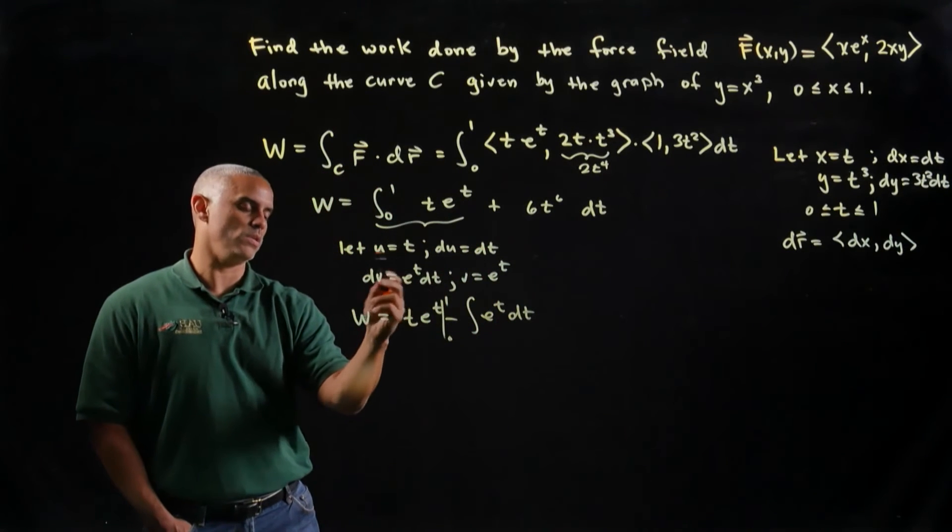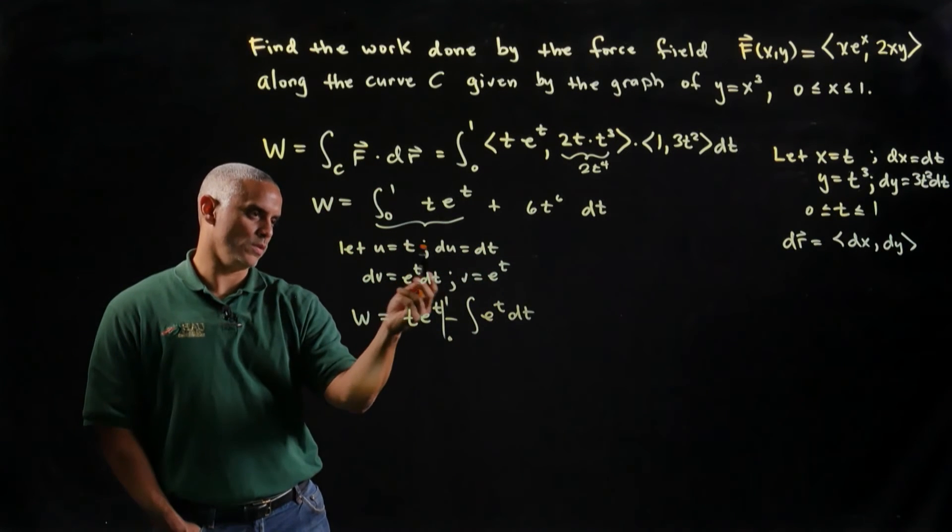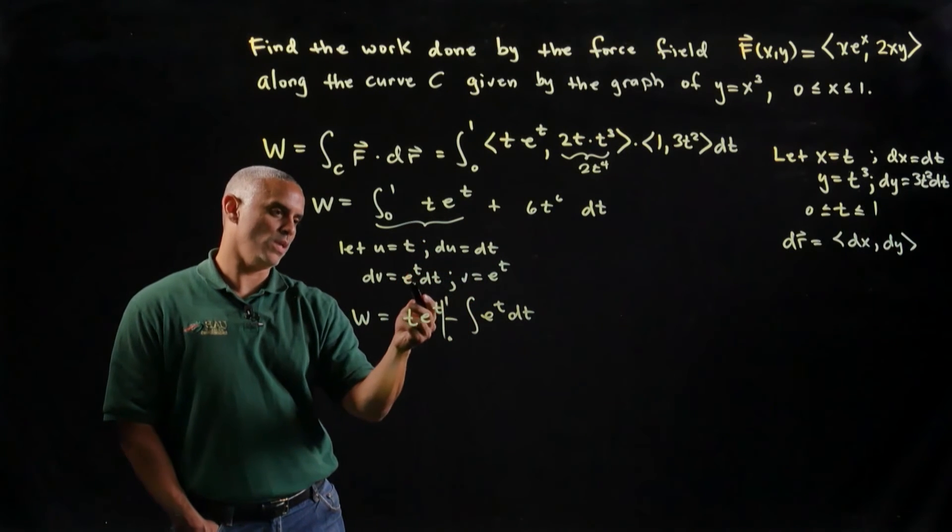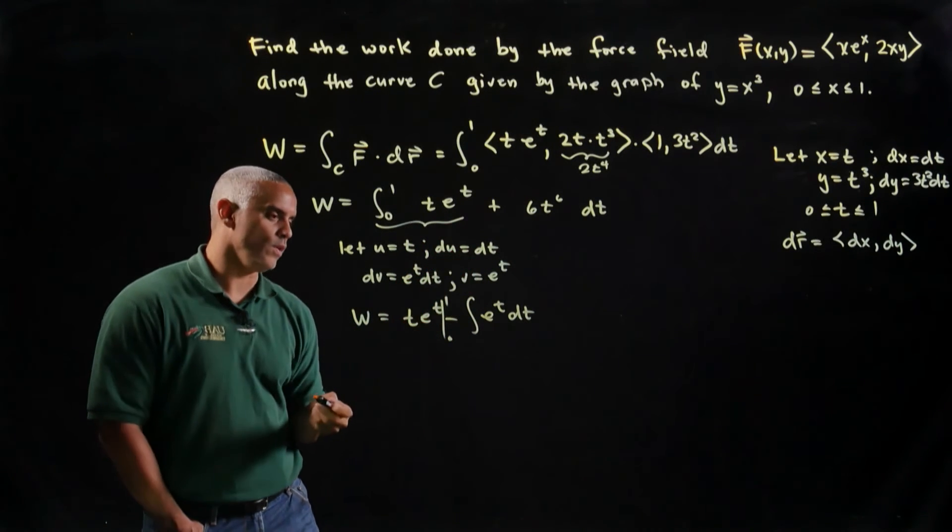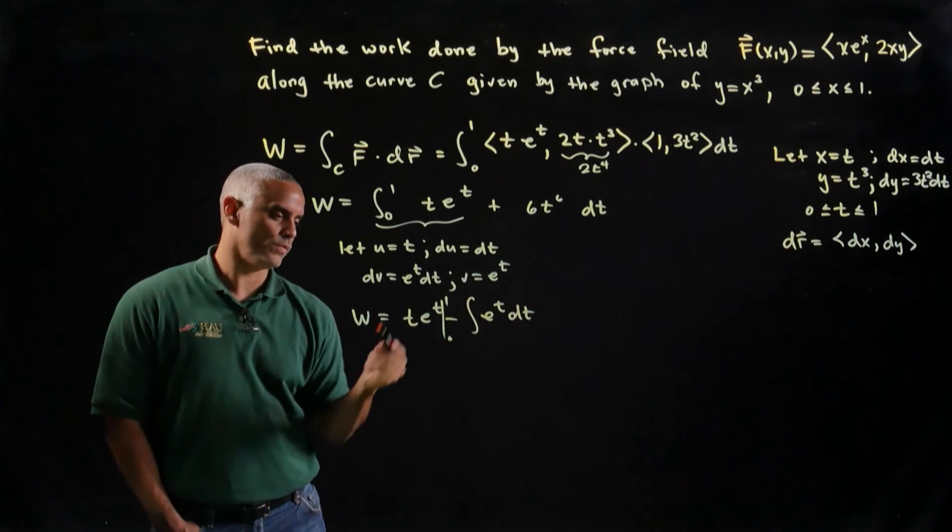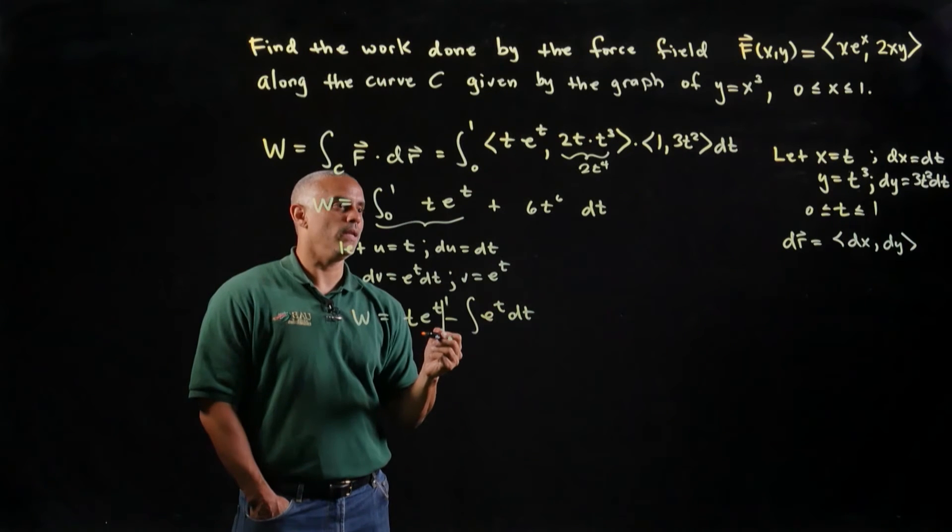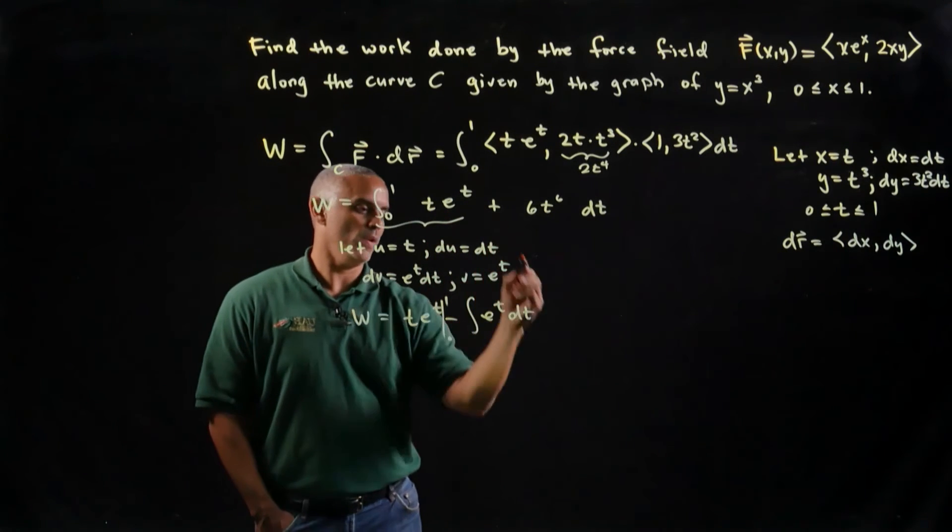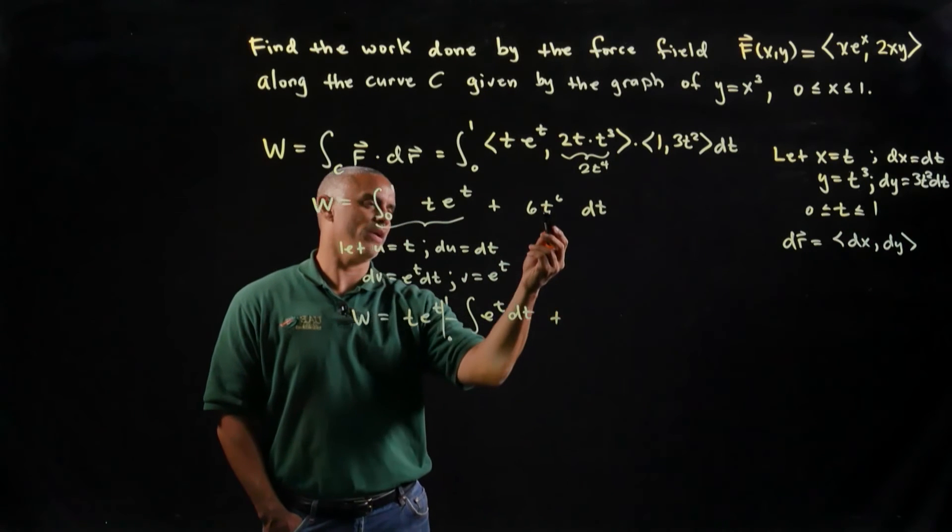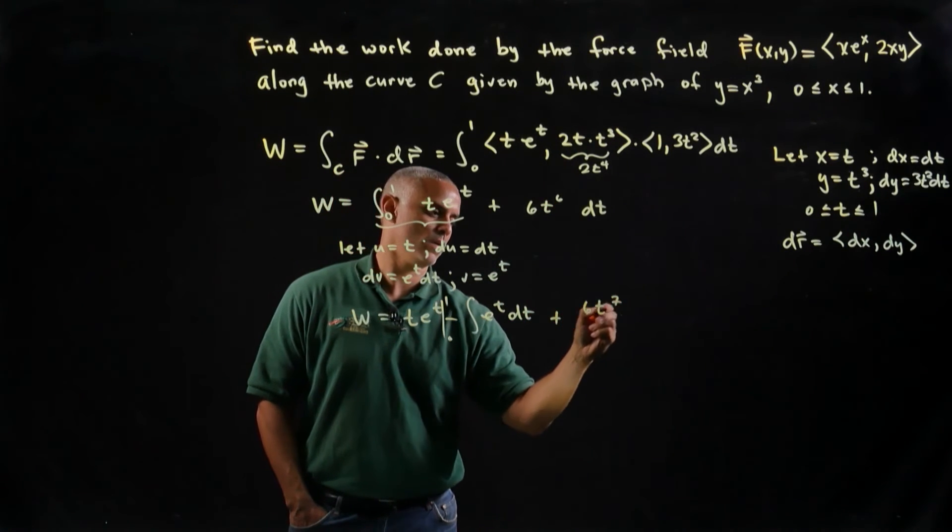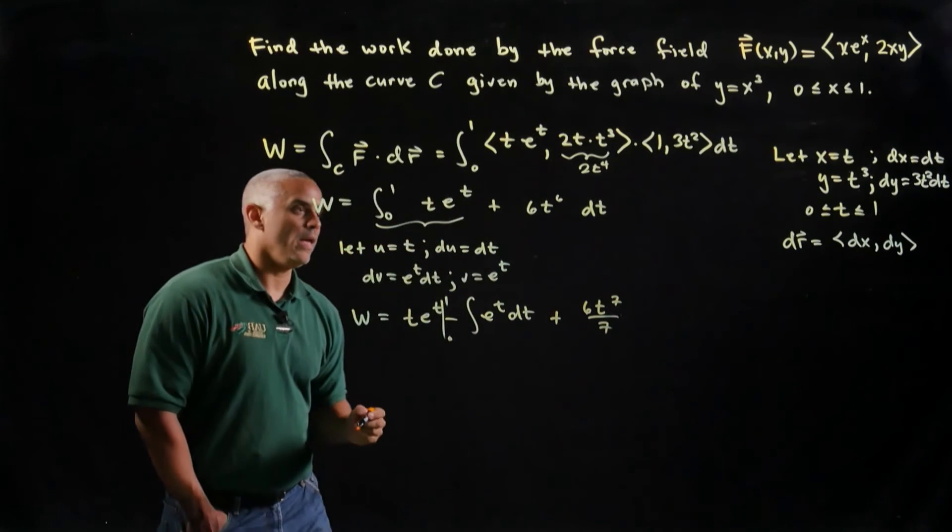That's sort of the reason why we always choose a polynomial function, because we'll notice that in a derivative it reduces, whereas this e^t would constantly show up in your v du. And let's see, where am I? So I have this plus, well I can go ahead and carry out this integral, I get 6t^7 over 7, and that should be evaluated from 0 to 1.